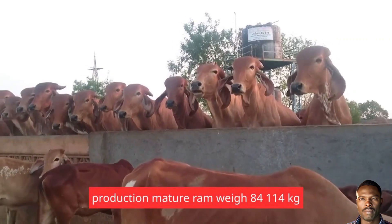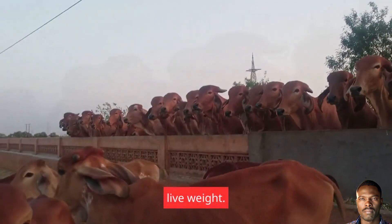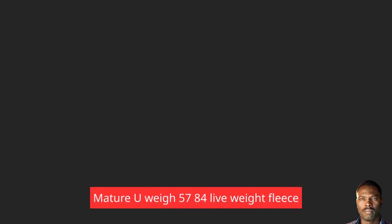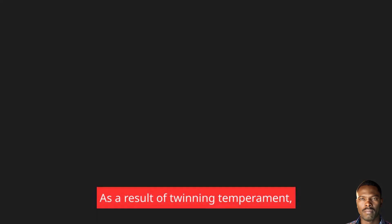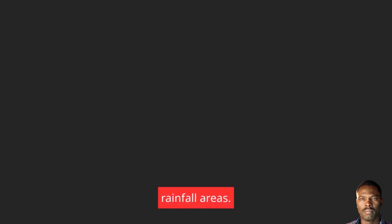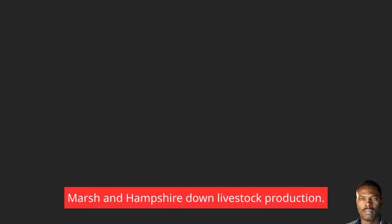Mature ewe weighs 54–84 kg live weight. Mature ewe weighs 57–84 kg live weight. Fleece weighs 5 to 5.5 kg per shearing. Lambing percentage 100–125% as a result of twinning. Temperament: docile and hardy, perform best in high rainfall areas. Note: other dual purpose breeds are Romney Marsh and Hampshire Down.